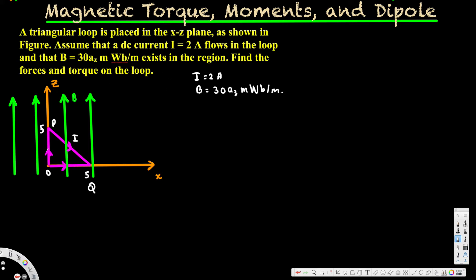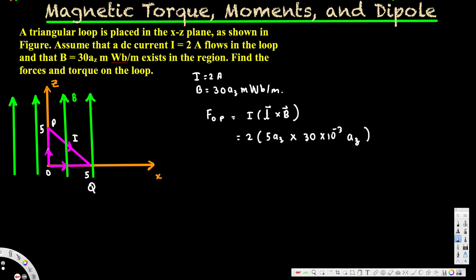We have these two pieces of information and we need to find the forces and torque. To find the force we use F = iL × B. For OP: F_OP = i × L × B = 2 × (5az) × (30 × 10⁻³ az). Since z cross z = 0, the whole thing is zero. The force on OP is zero.